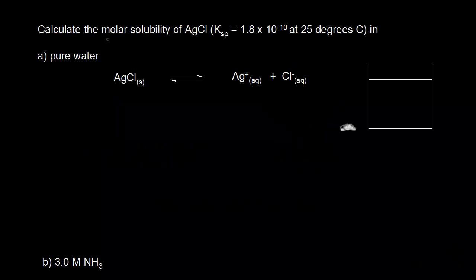First, let's calculate the molar solubility of silver chloride in pure water, and then we're going to compare the solubility we get in part A to the solubility we're going to get in part B. In part B, it's no longer pure water — we're going to have some ammonia present.